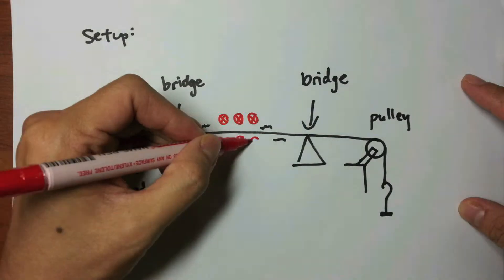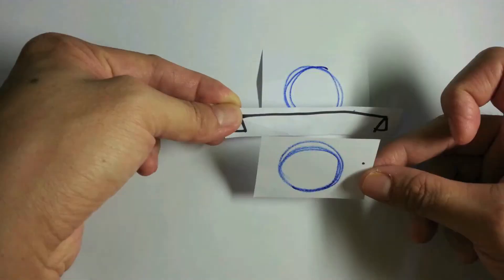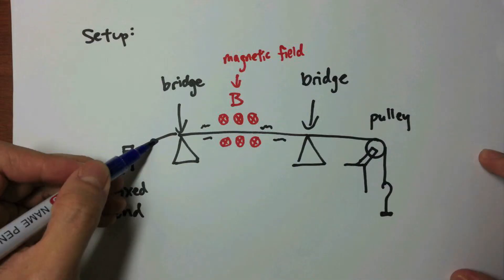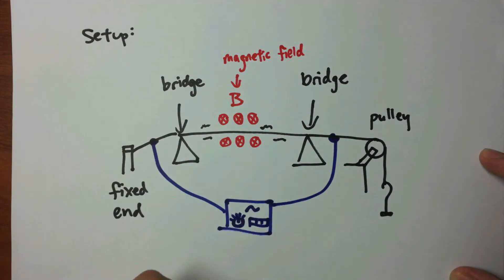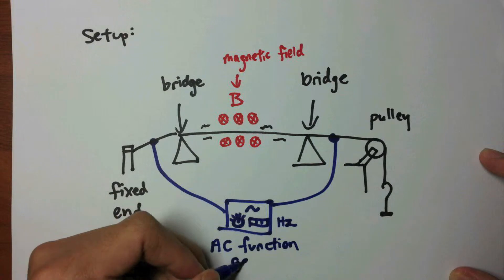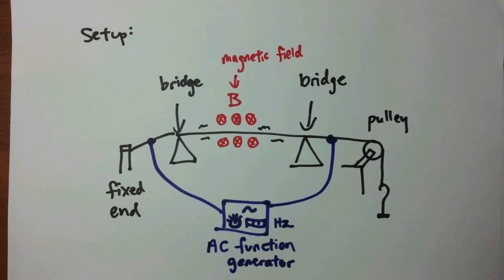A uniform horizontal magnetic field is generated by a pair of large electromagnetic coils on both sides of the wire. The wire is connected on both ends to a function generator.